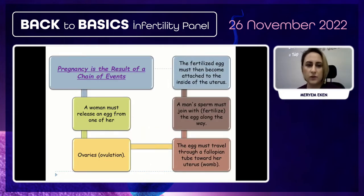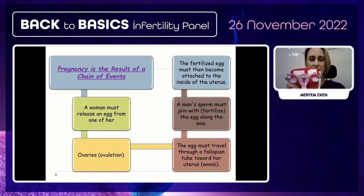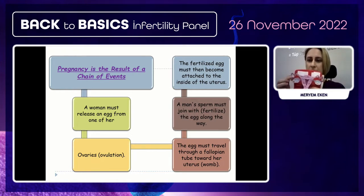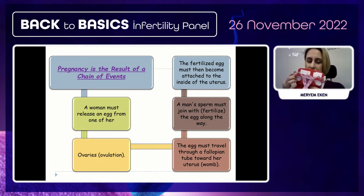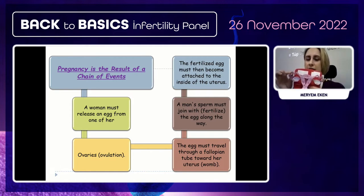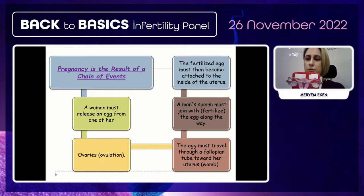Pregnancy is the result of a chain of events. The woman must release an egg through ovulation, and the egg must travel through the fallopian tubes, which must be open and working. Sperm must join with the egg in the tubes and fertilize it, and the fertilized egg must then attach to the inside of the uterus. All of this system should work correctly.